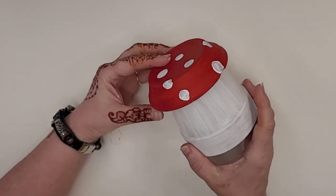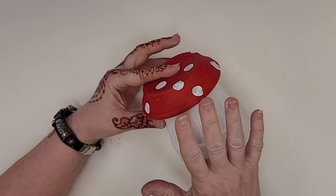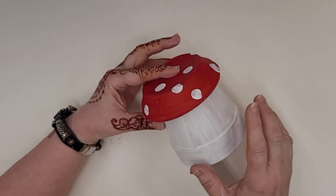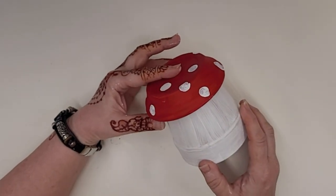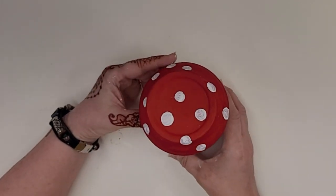Now in your kit, you'll get enough to make the mushroom, but if you're going to put it outside, I recommend doing a little bit of a sealant on top of it, a waterproof sealant.